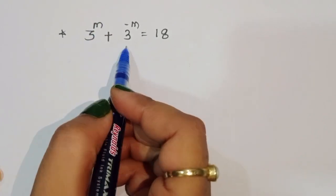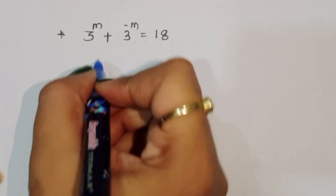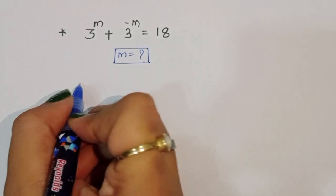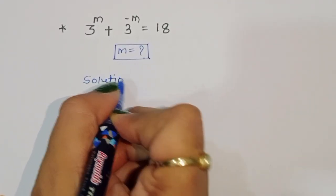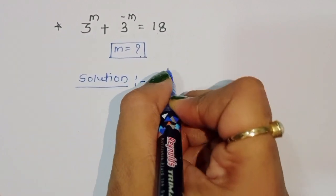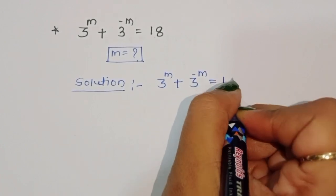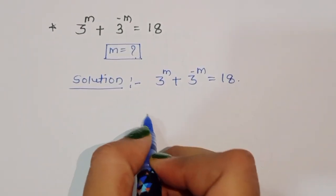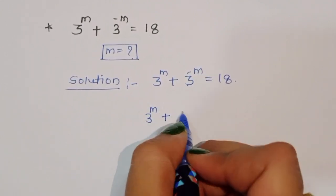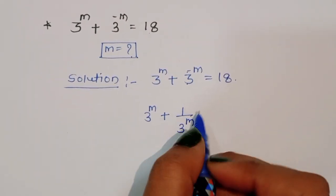The question is: given 3 power m plus 3 power minus m is equal to 18, we have to find the value of m. So we can write 3 power minus m as 1 upon 3 power m, making it positive. So the equation becomes 3 power m plus 1 upon 3 power m is equal to 18.